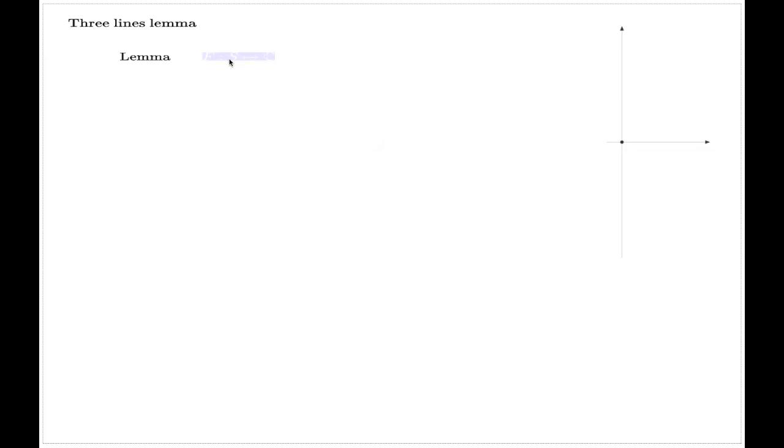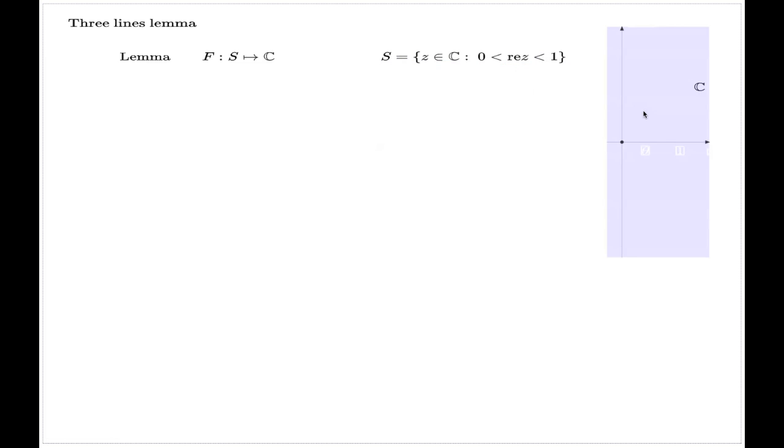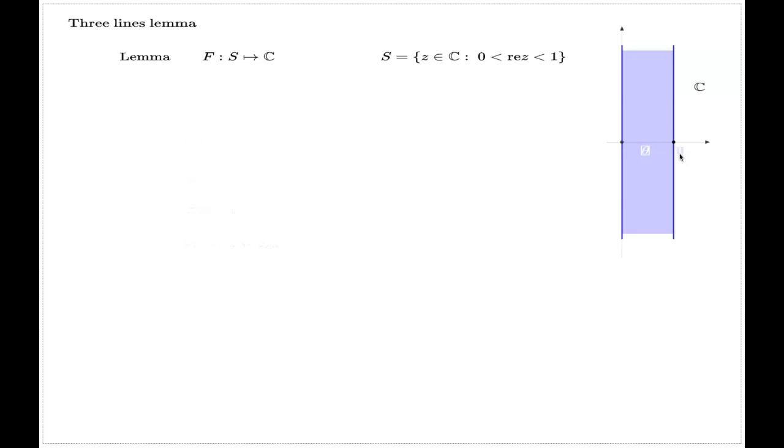The three-lines lemma says if I have a function F, which is defined in a strip S, it's a strip on the complex plane with all numbers for which the real part is between zero and one. So we have a function which is analytic in this strip, and which is also bounded and continuous in the closed strip.